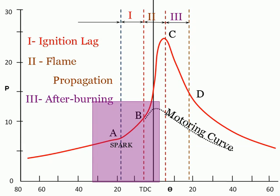This occurs anywhere from 10 degrees to 30 degrees before TDC, depending on the geometry of the combustion chamber and the immediate operating conditions of the engine. This high-temperature plasma discharge between the electrodes ignites the air-fuel mixture in the immediate vicinity, and the combustion reaction spreads outward from there. Combustion starts very slowly because of the high heat losses to the relatively cold spark plug and gas mixture. Flame can generally be detected at about 6 degrees of crank rotation after spark plug firing.